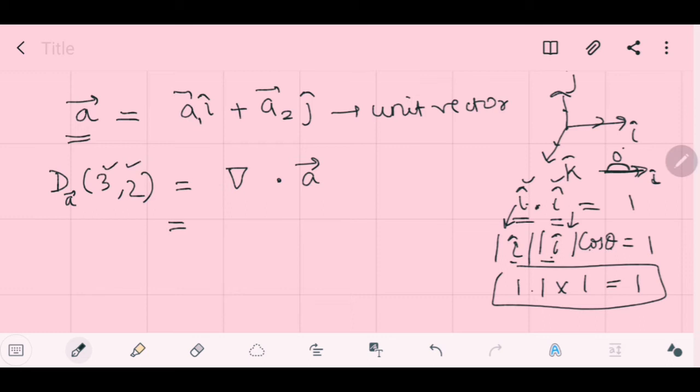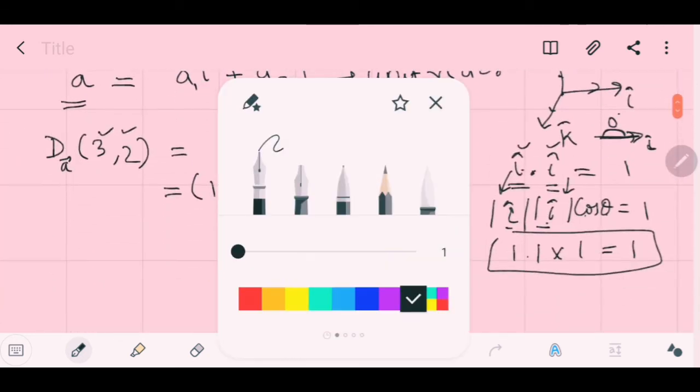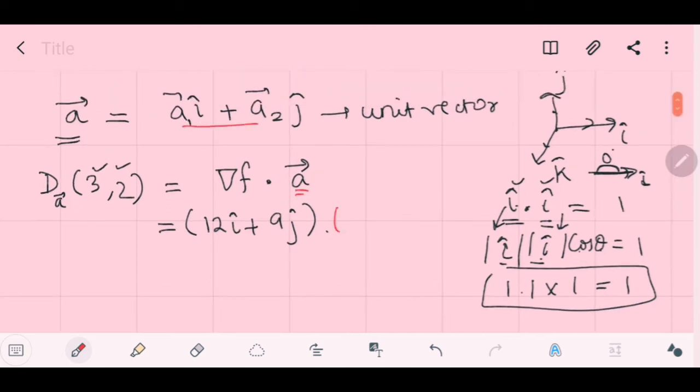Now, you have (3, 2) point, you have your function here, gradient, you have already found out, which is 12i cap, 9j cap. Now, so, your a vector is, here, a₁i plus a₂j. So, as I told you, that same, same dot is 1. So, 12i cap into a₁i, i dot i is 1. So, it is 12a₁ plus 9a₂.